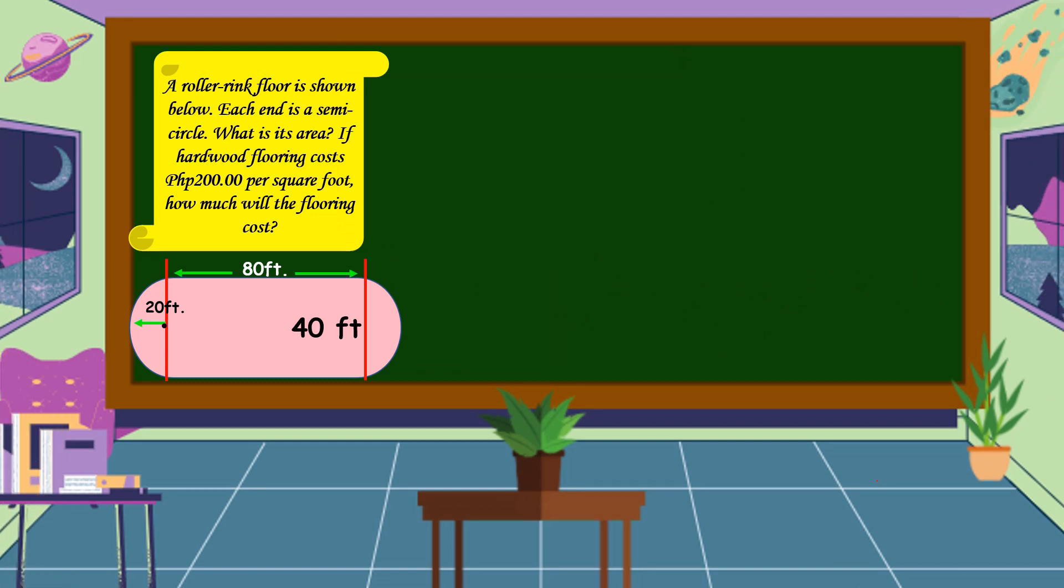Alright, the last step is we are going to check. Let's divide 891,200 pesos by 200 pesos and it gives the answer of 4,456. As we all know that 4,456 is the total floor area of our composite figure.